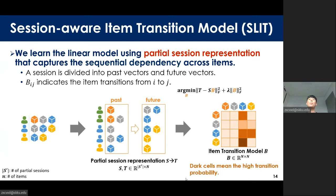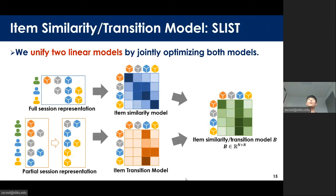A linear model that uses partial session representation is SLIST_T, which means Session-Aware Item Transition model. It captures sequential dependency across items. The past matrix S and the future matrix T are made by partial session representation, and SLIST_T is trained to infer T from S. Each cell represents the transition probability from item to item — the darker the color, the higher the transition probability. Finally, we unify SLIST_S and SLIST_T to consider sequential dependency and session consistency together. The unified model is SLIST, which means Session-Aware Item Similarity Transition model, obtained by jointly optimizing each model's objectives.